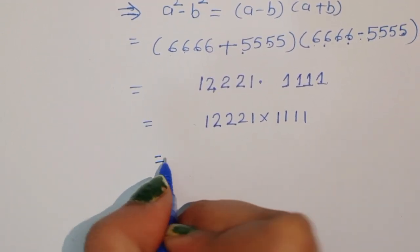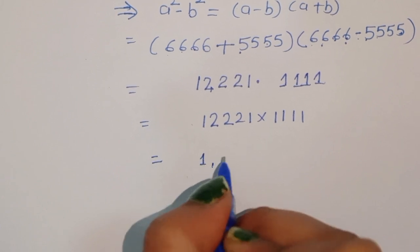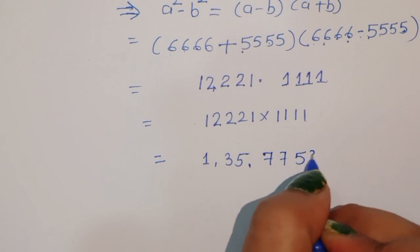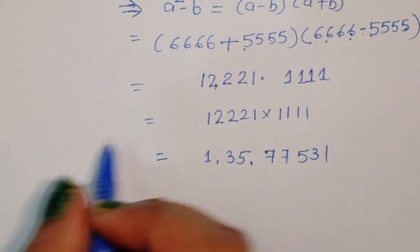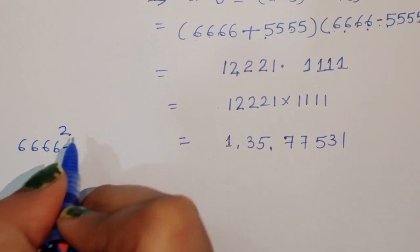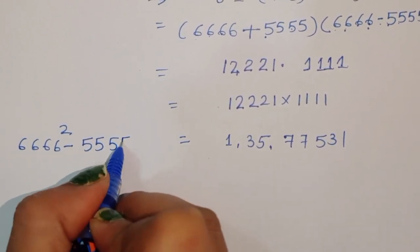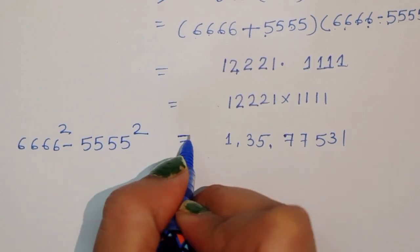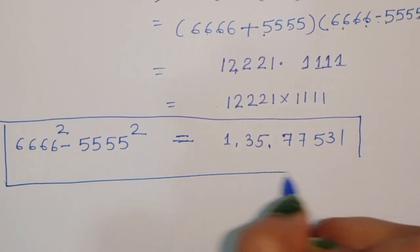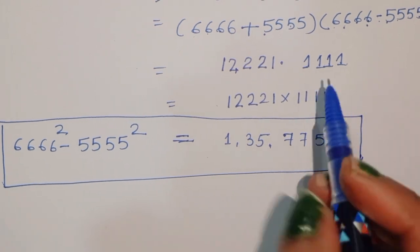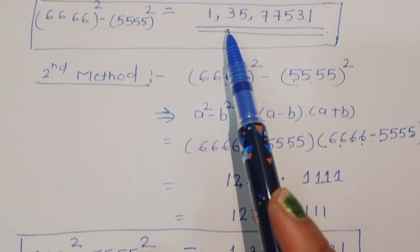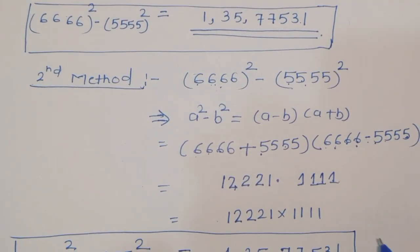When we multiply 12221 times 1111, we get 13,577,531. So 6666 squared minus 5555 squared equals 13,577,531. In both methods we got the same value. This is the second method, and both solutions are confirmed. Thank you.